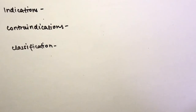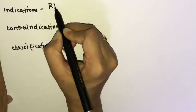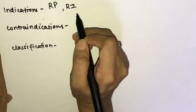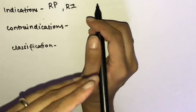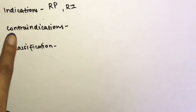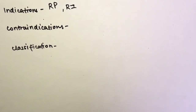Indications for removal of impacted teeth include: recurrent pericoronitis (inflammation of the soft tissue with recurrent infections), root resorption and caries that are not preventable, dentigerous cysts or tumors, and pathological fracture of the jaw.